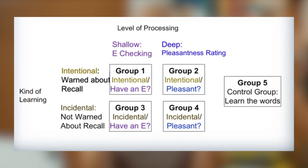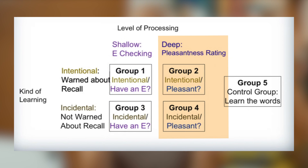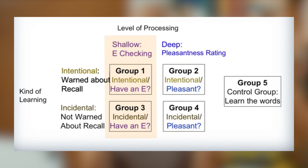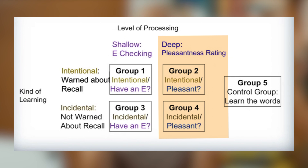The other variable Hyde and Jenkins looked at was how participants rehearsed or encoded words — what became known later as the levels of processing. Two groups had to listen to the words and check whether or not it had the letter E in the spelling. The other two groups had to rate whether or not they found the actual word pleasant. If you are checking for E's, you are focusing on the spelling of the word, which is at the structural or shallow level of processing. If you are rating its pleasantness, you are thinking more deeply about the meaning of the words related to your own experience — this is deep level processing.